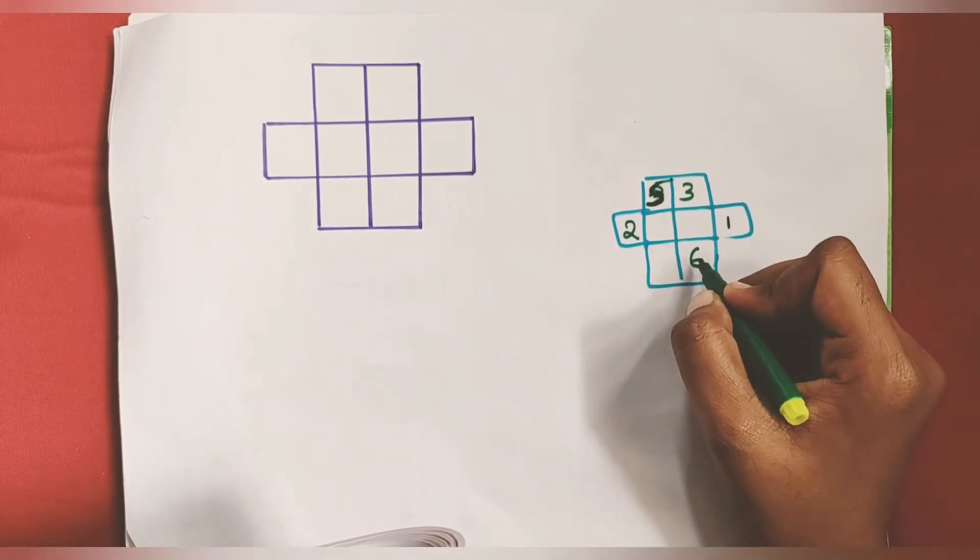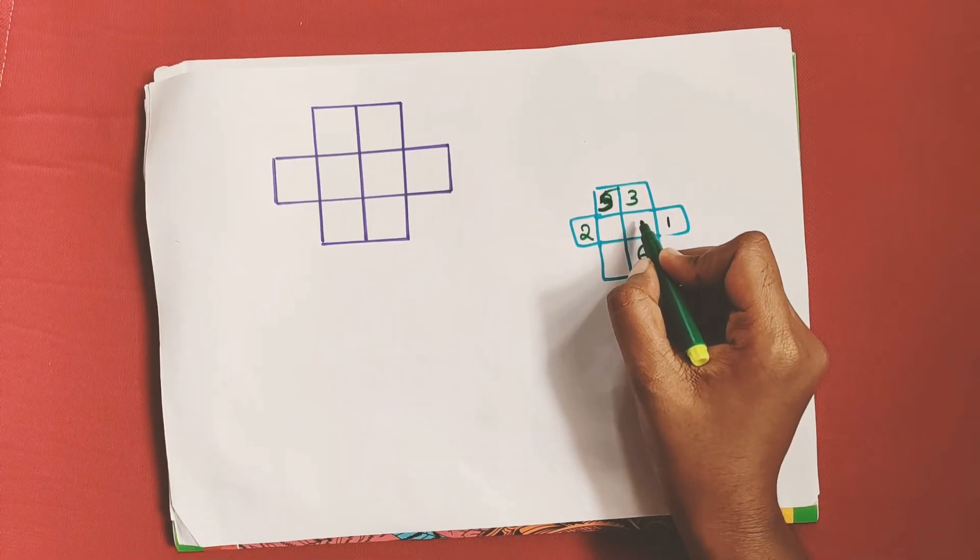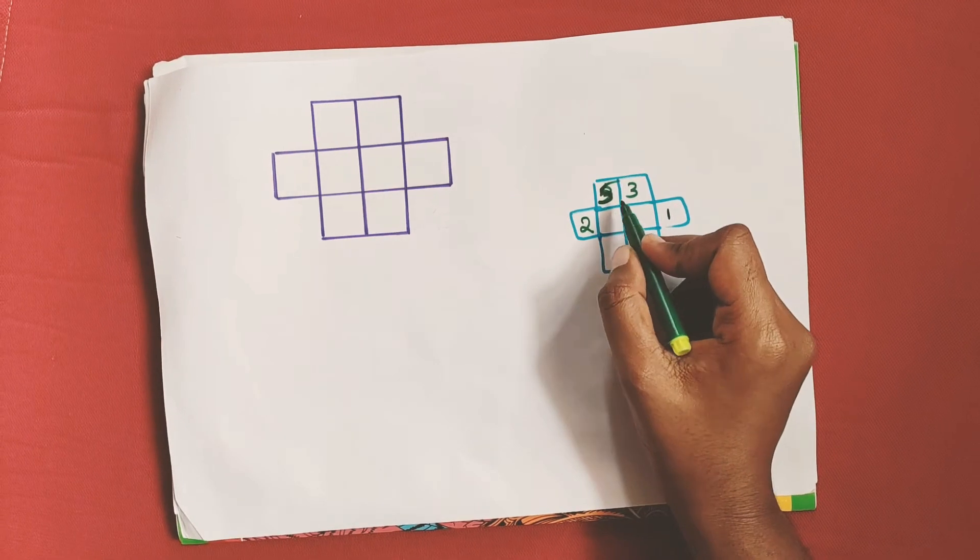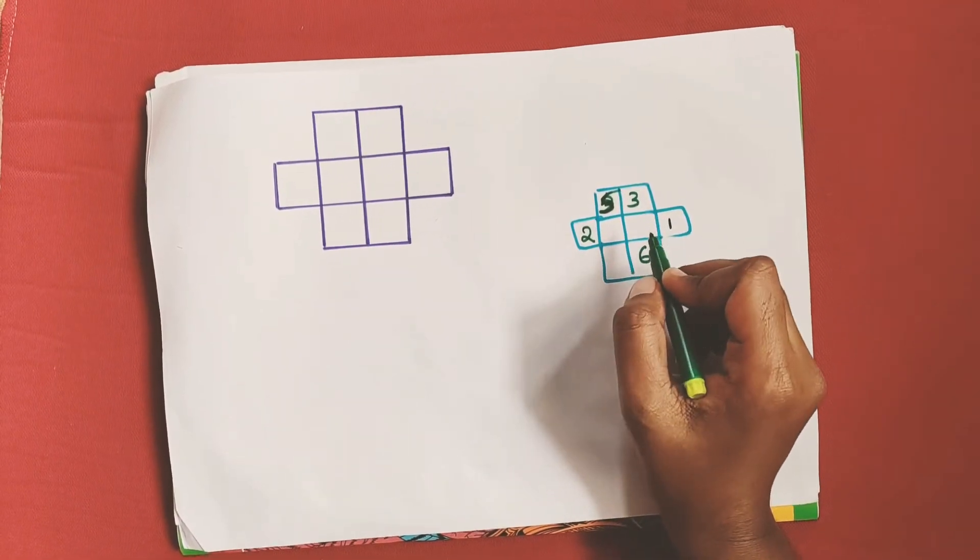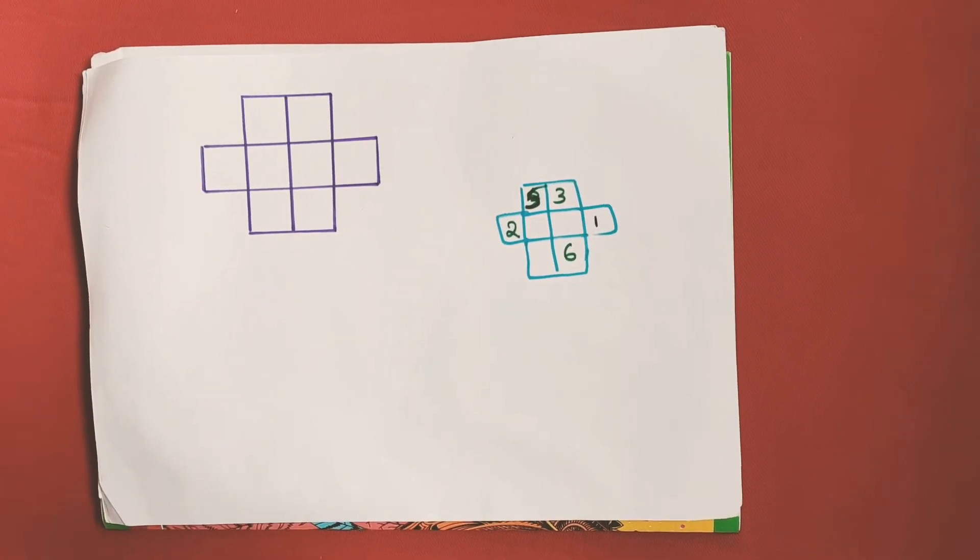If I place 7 anywhere in these boxes it will break the rule, so this is not the correct method. Pause this video here and try to solve it yourself.